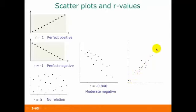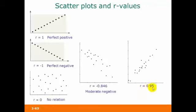In this one, we have a positive relationship because the data points are going up as we go from left to right. This one looks a little bit stronger and fits a straight line pattern better, so we would expect the R value to be fairly close to 1. The R value for this one is actually 0.95, so we would call this a strong positive relationship.